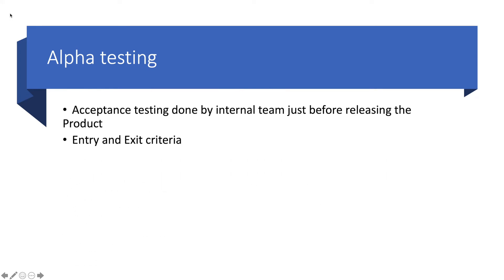Now let's go by definition. Alpha testing is acceptance testing done by the internal team just before releasing the product. Once your software is ready, developers and QA have agreed that all internal bugs are solved, and it is time for release. Just before release, they make sure all the functionality they are providing is working. They don't do negative testing again — they just do acceptance testing. That is what we call alpha testing.